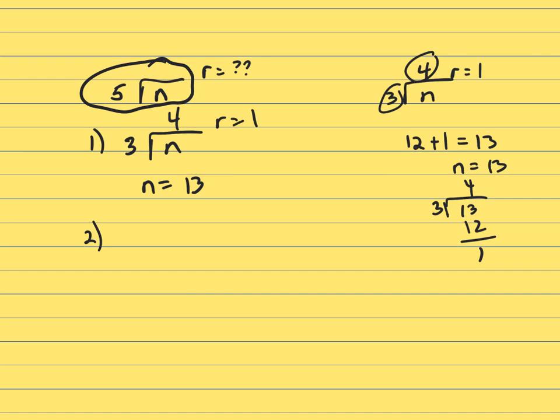So clue 2. When n is divided by 4, the remainder is 1. But I can't find n because I don't know how many times 4 went into n. So only clue 1 works.